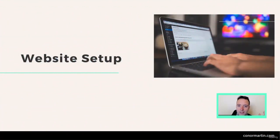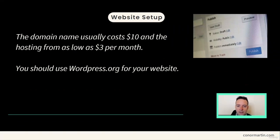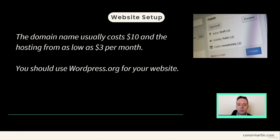The next thing you'll want to do is set up a website — that's what we need to blog. You will need a domain name and web hosting to get started. The domain name is the address of the website — the URL that people type in to find your website. Hosting is where the website is stored on a server. I use a company called A2 Hosting, which usually costs around five dollars a month, and the domain name costs ten dollars once a year. I highly recommend using WordPress, and you do it through your hosting.